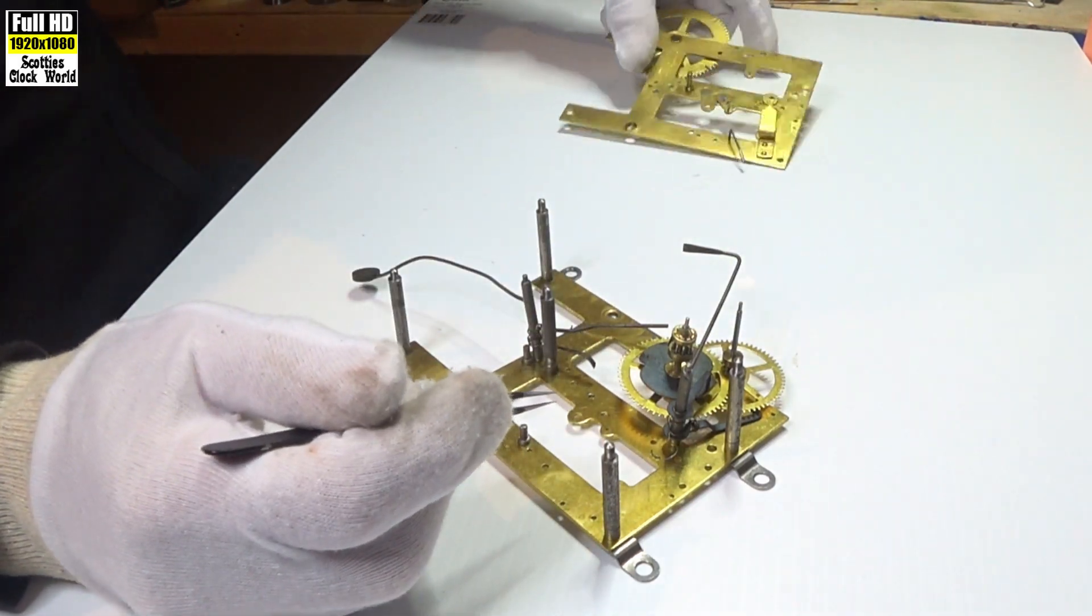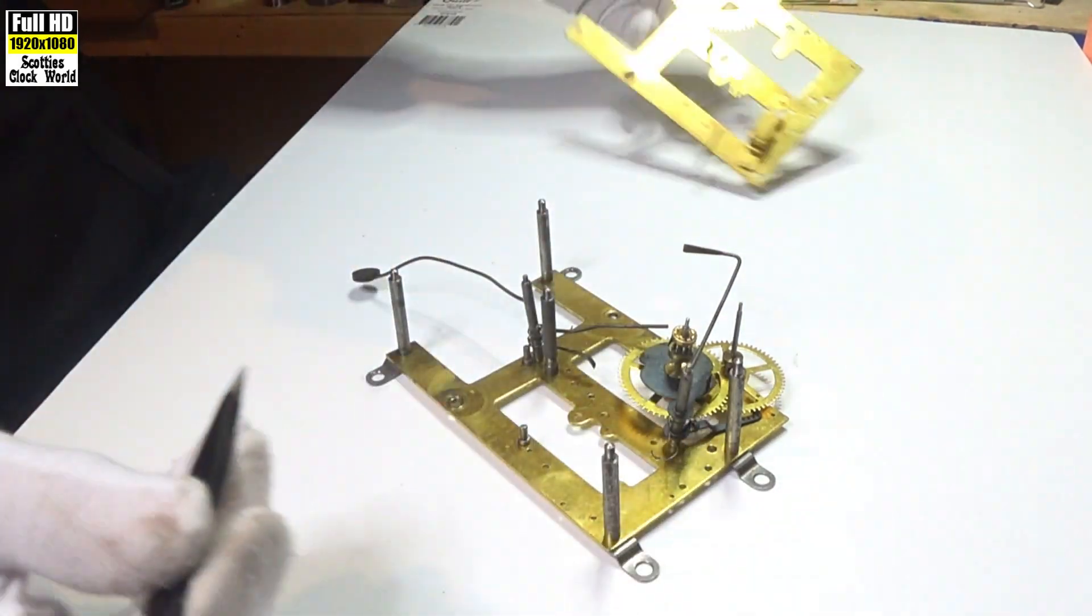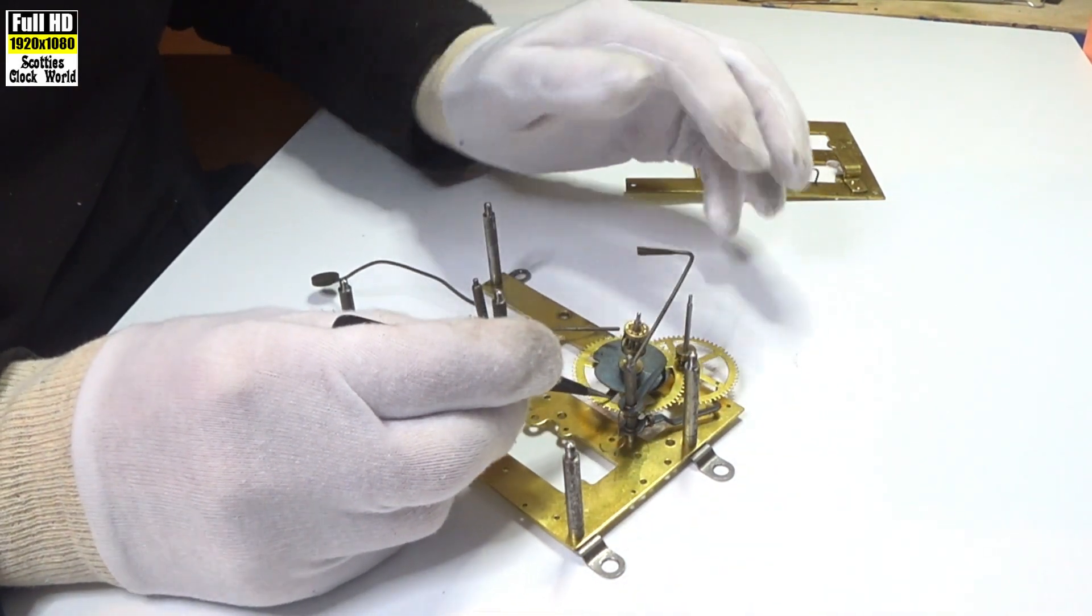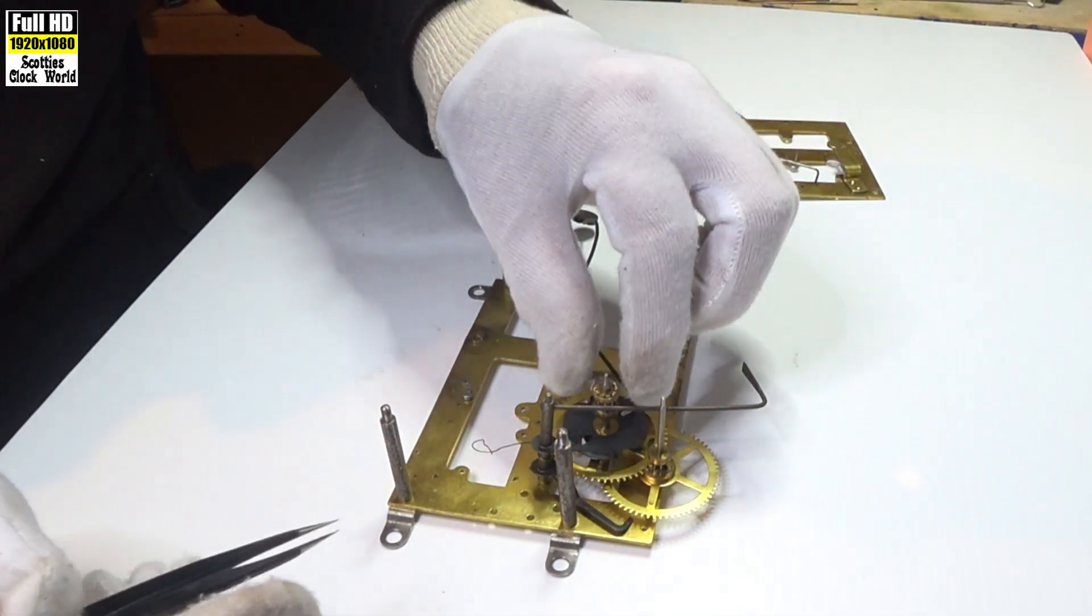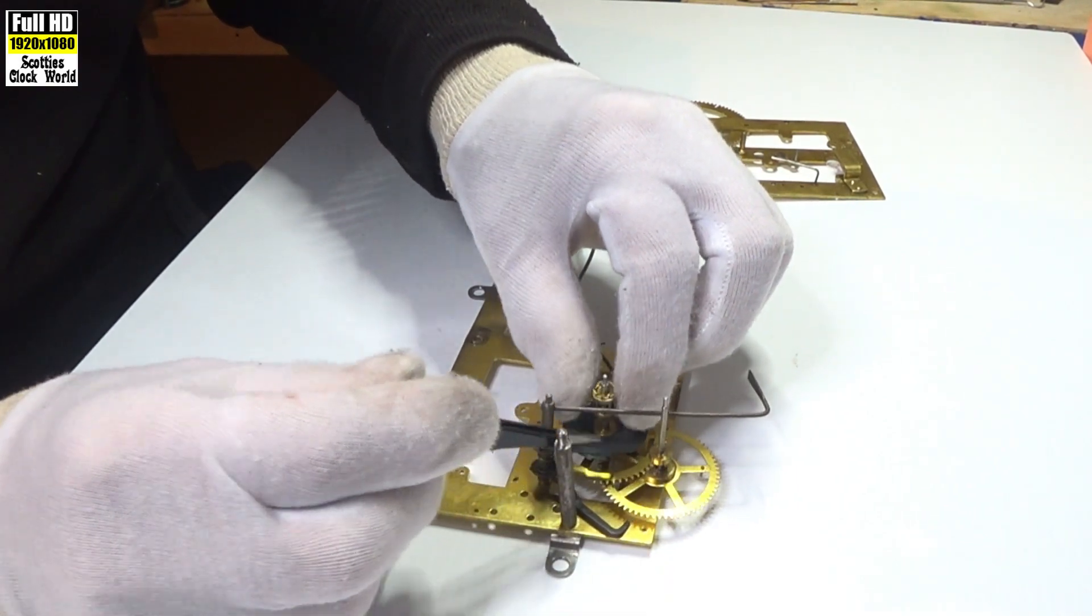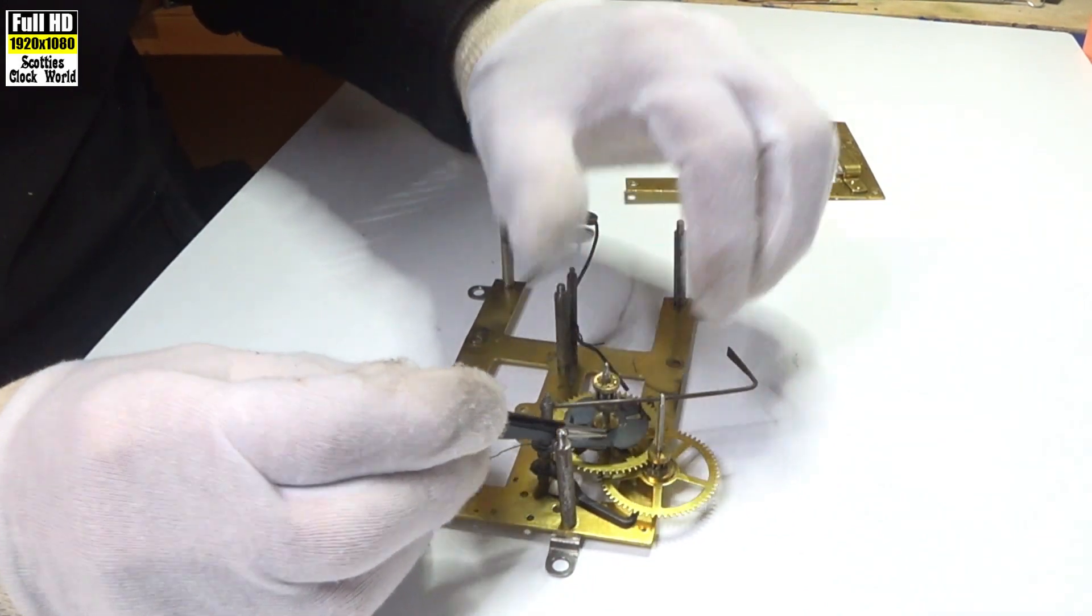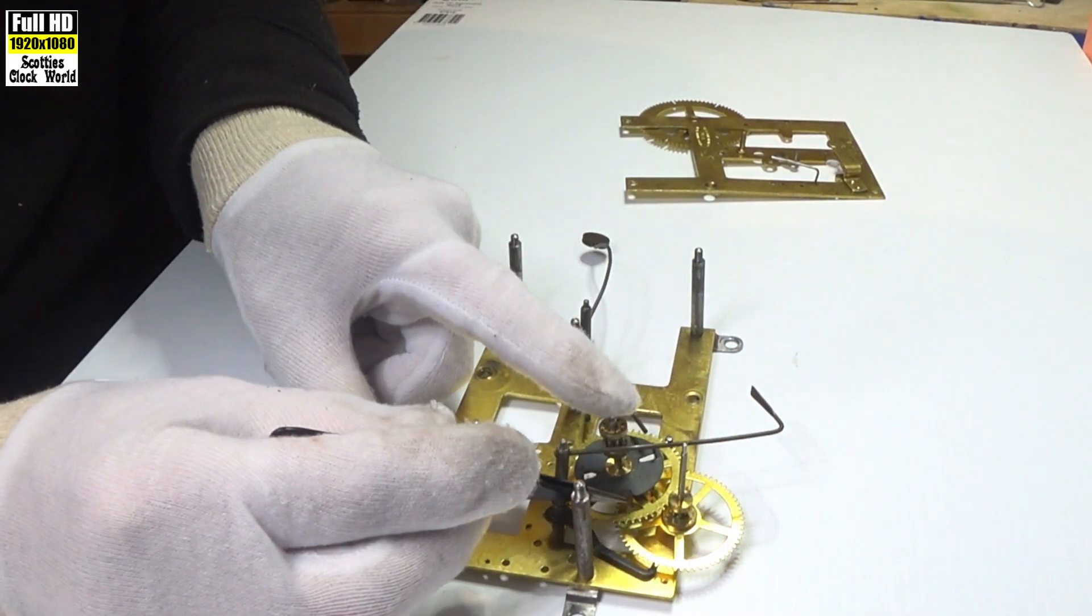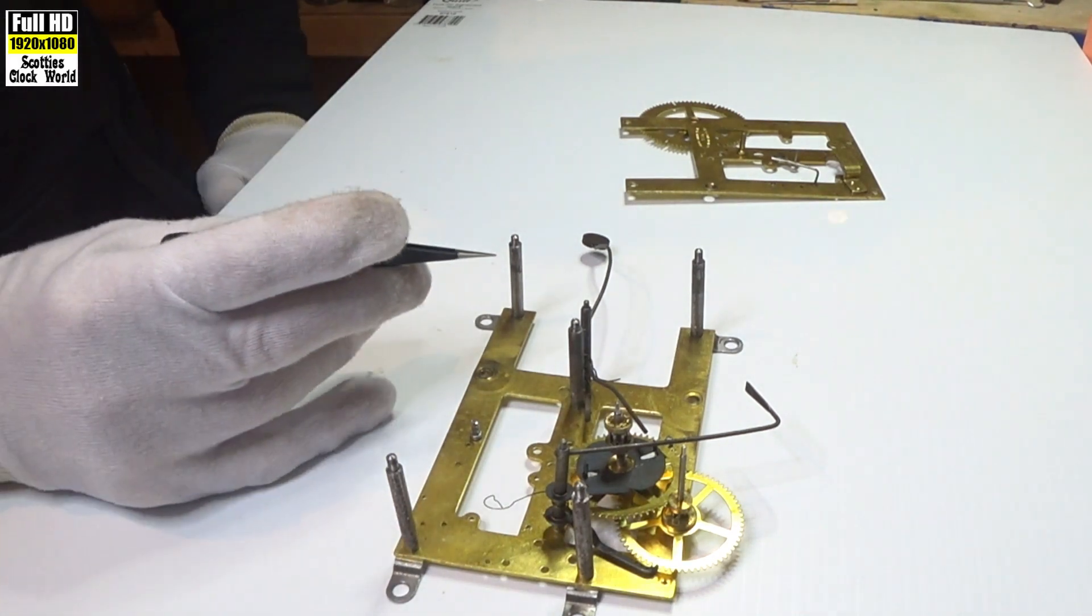So to set this up correctly, the count lever, as we saw, fits into a deep slot there. The maintenance cam is adjusted and turned round so that that lever catches in there like so. You can see that lever is in that hole in the maintenance cam. Now that's one and two.